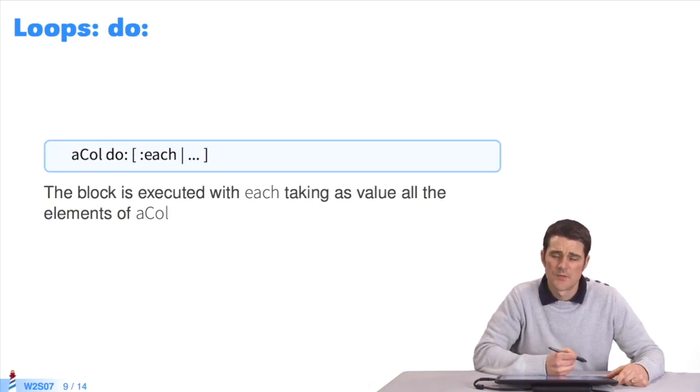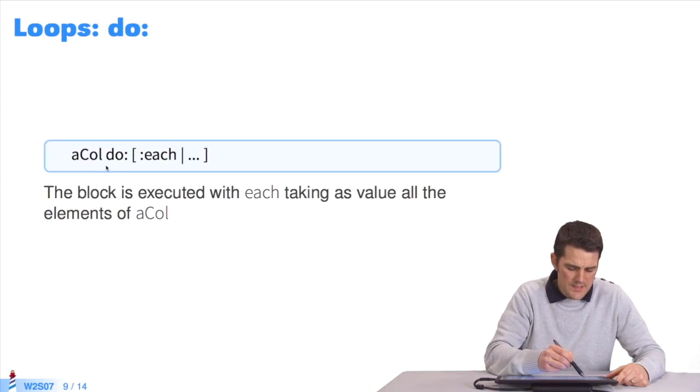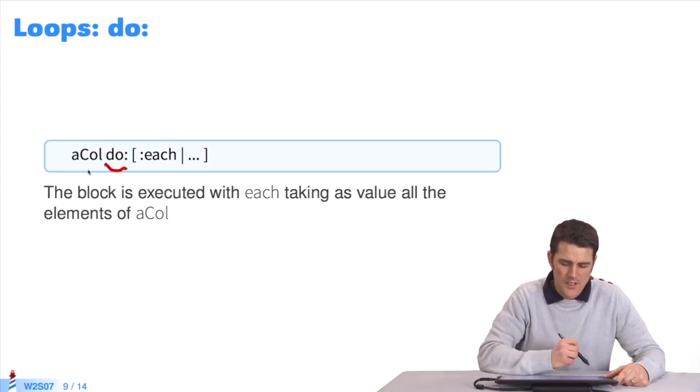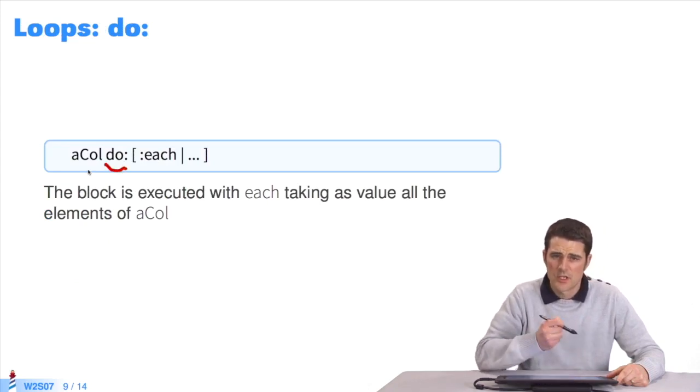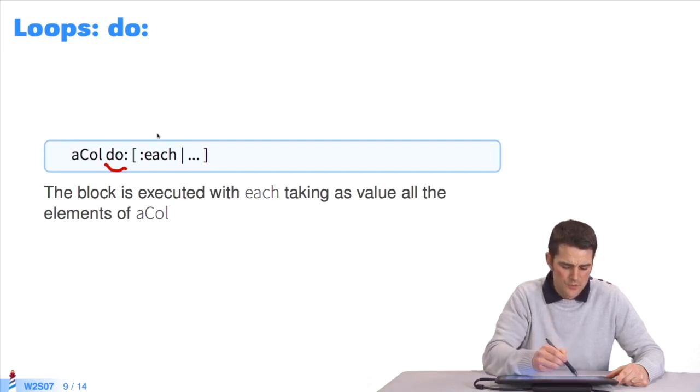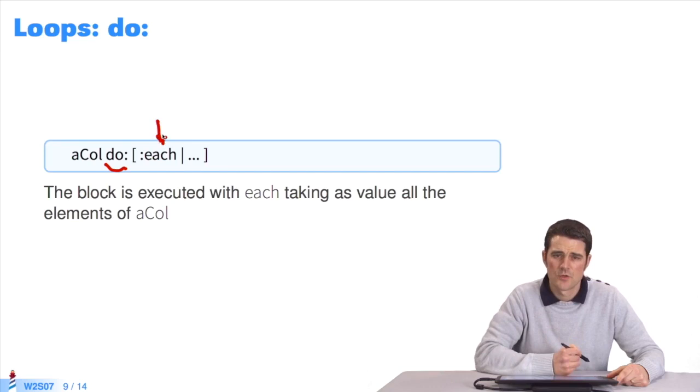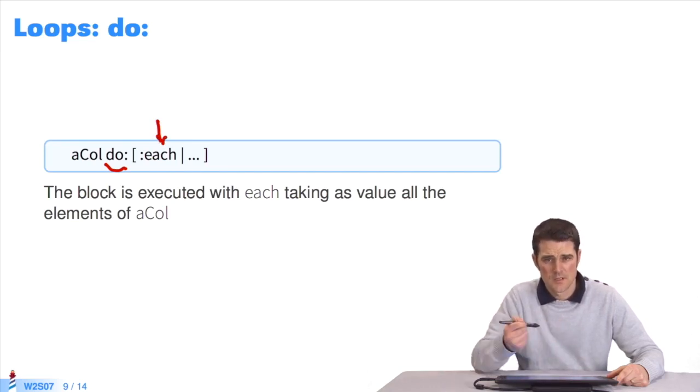Do, for instance, is the most common message. You send the message do to a collection and pass it a block. With every loop, the parameter of the block, each, receives the first element of the collection, then the second until the final element of the collection.